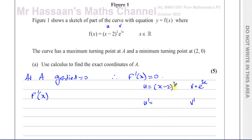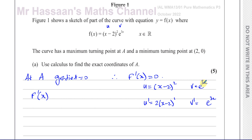When you differentiate U = (x-2)², you can use the chain rule: multiply by the power, reduce the power by 1, then multiply by the differential of what's inside the function, which is 1. So dU = 2(x-2). We could have expanded to x²-4x+4 and differentiated to get 2x-4, which is the same thing. For V = e^(3x), differentiating e to the power of something keeps it the same, but you multiply by the differential of the inner function 3x, giving dV = 3e^(3x).